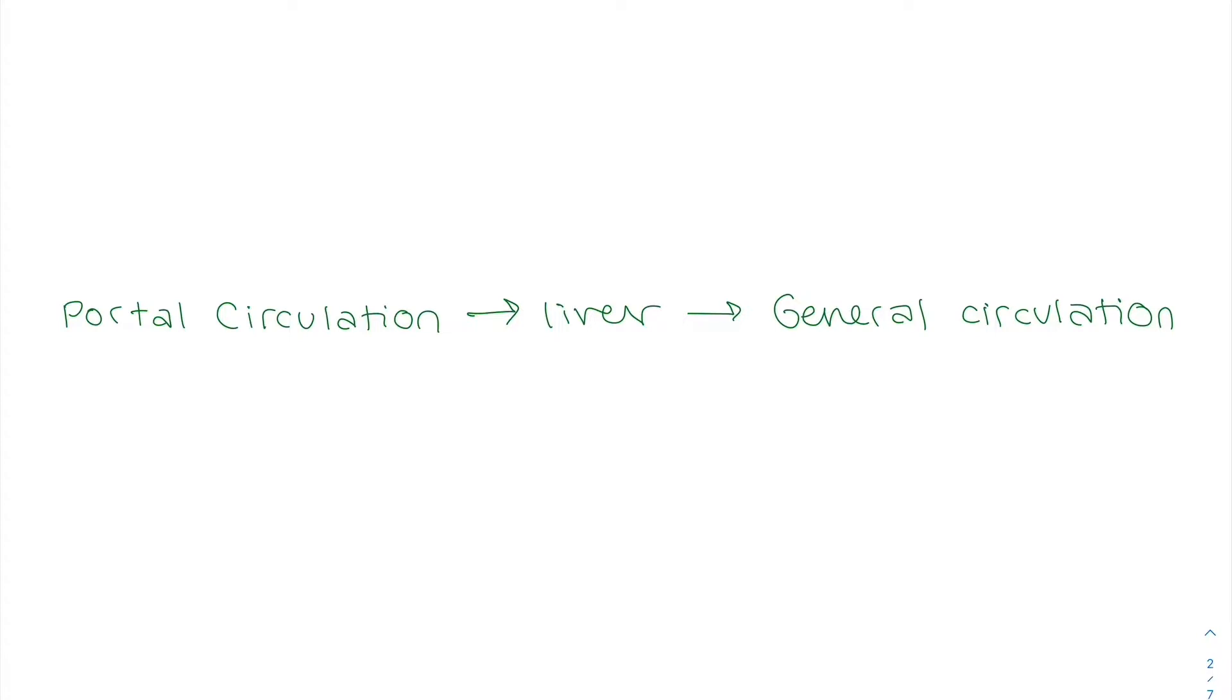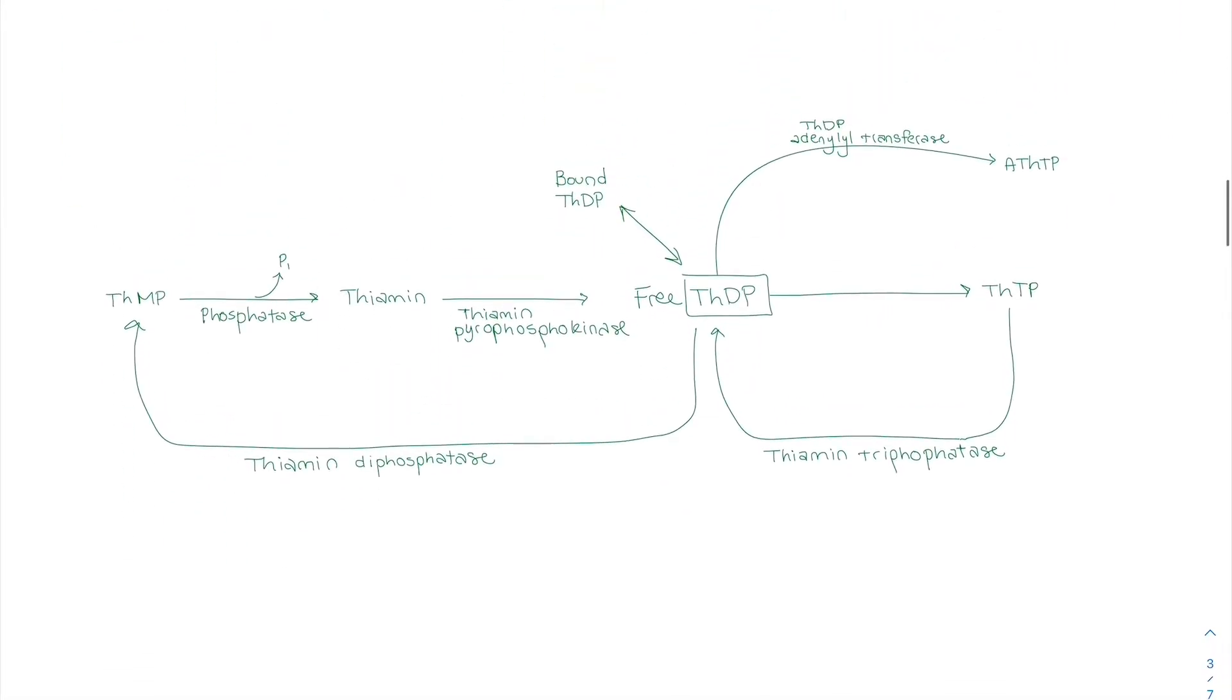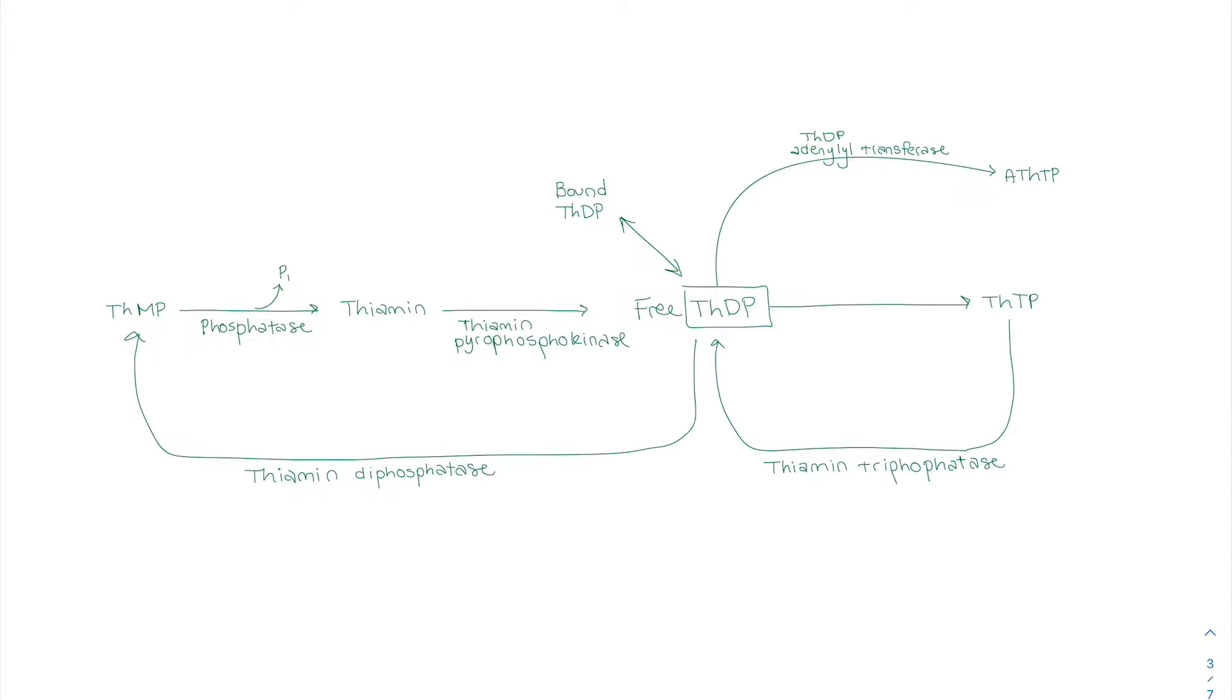So only about 30 to 50 milligrams are stored in our body. And now I want to talk about what it does when it gets into our body. So there's a big old mechanism here, but we're going to break it down. So I want to talk about this, thiamin diphosphate, thiamin pyrophosphokinase, and then the THDP adenylyl transferase. And I probably butchered all those names. So each of these three are the primary enzymes that occur in this mechanism.